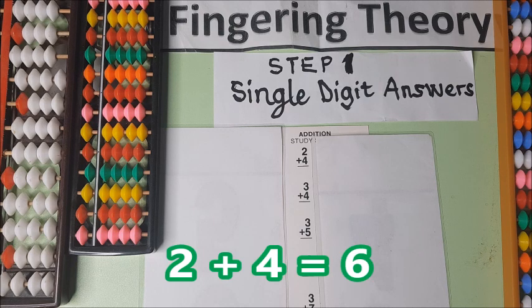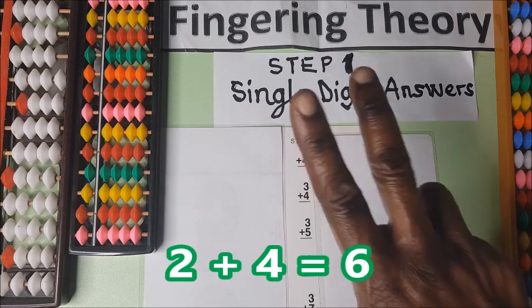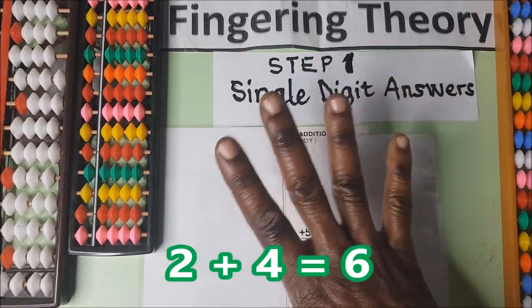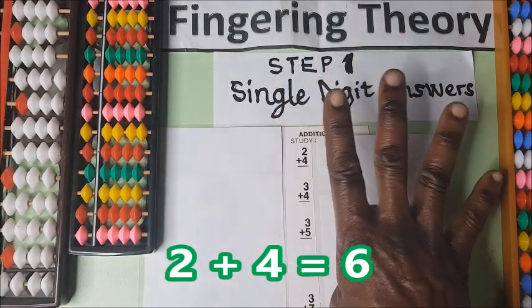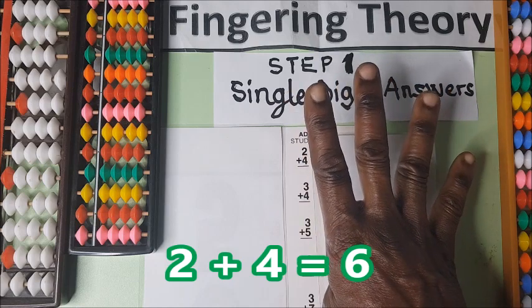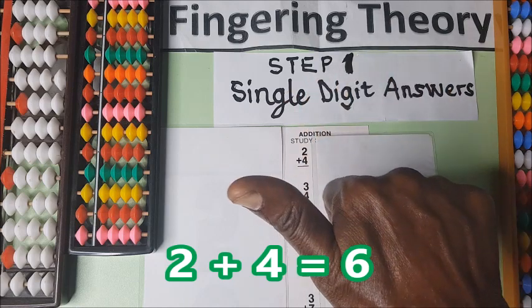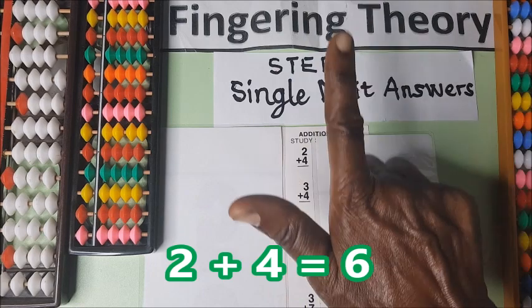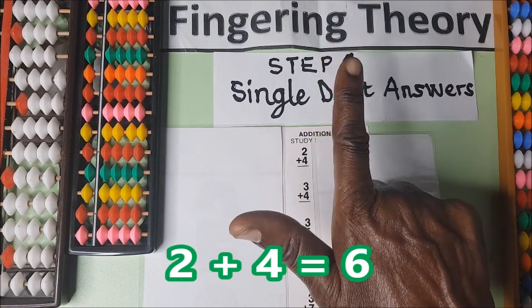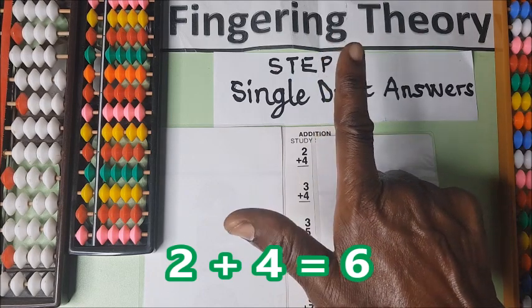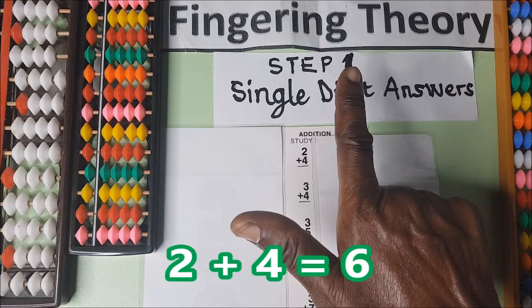Here we have 2 plus 4. Go to the larger number. 1, 2, 3, 4. Now counting up: 1, 2. So you have 5 plus 1 is 6. So 2 plus 4 is 6.